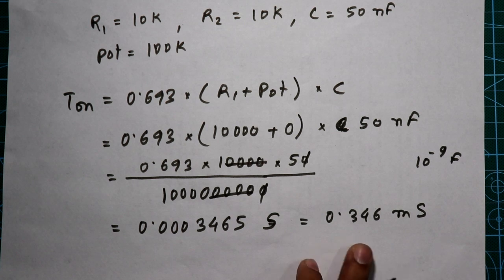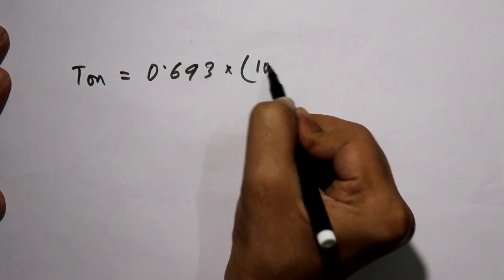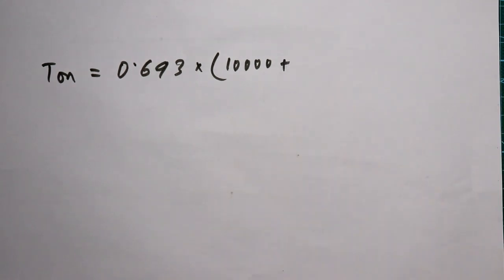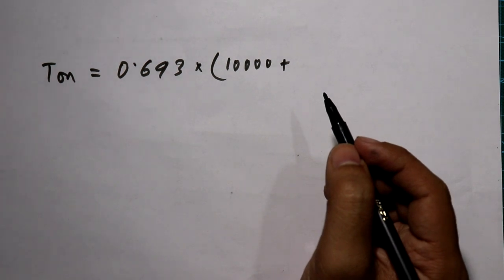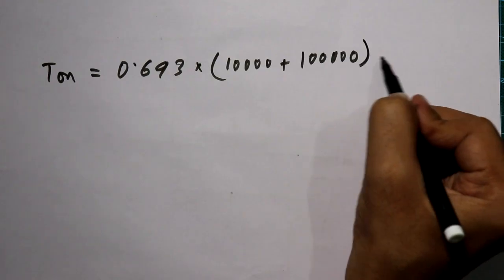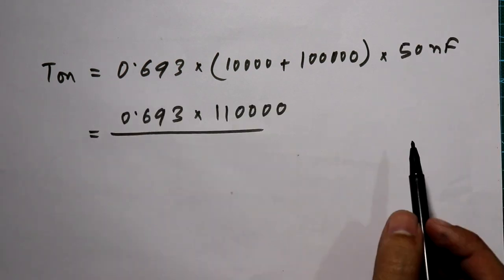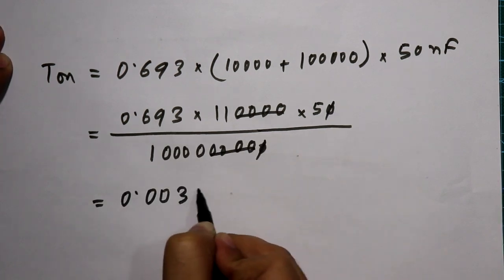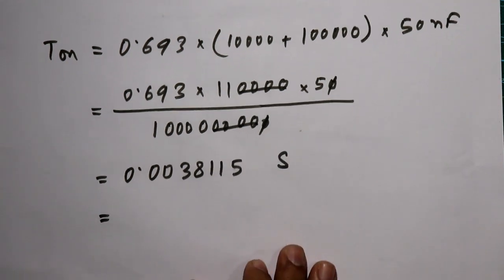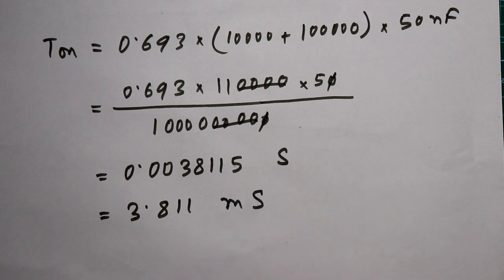So this is the minimum T-on time. Now calculating the maximum T-on time: 0.693 × (R1 = 10,000 ohms + potentiometer maximum = 100 kilo-ohms) × capacitance of 50 nanofarads. We are getting 0.38115, which equals 3.811 milliseconds.